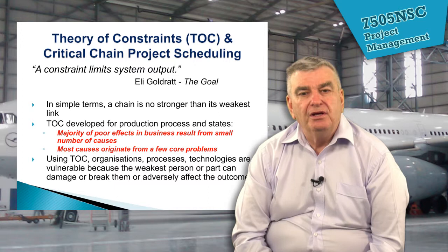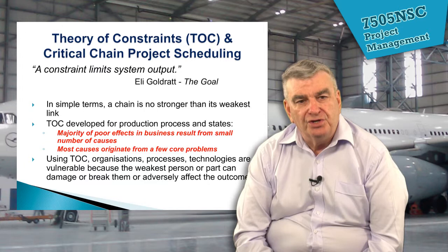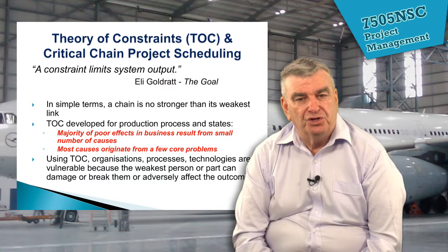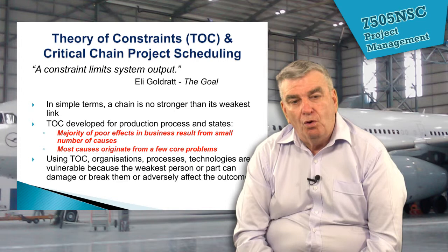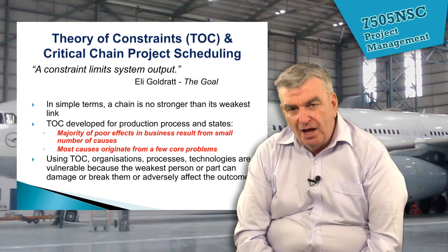Critical chain project scheduling is driven by a concept called the Theory of Constraints, defined by Eli Goldratt, who said a constraint limits a project's output. For example, you might have only one person with a particular skill yet need them in two places at once, or a particular machine can only produce at a certain rate. We need to know what our constraints are and how they can affect the project from being completed in the most effective way.